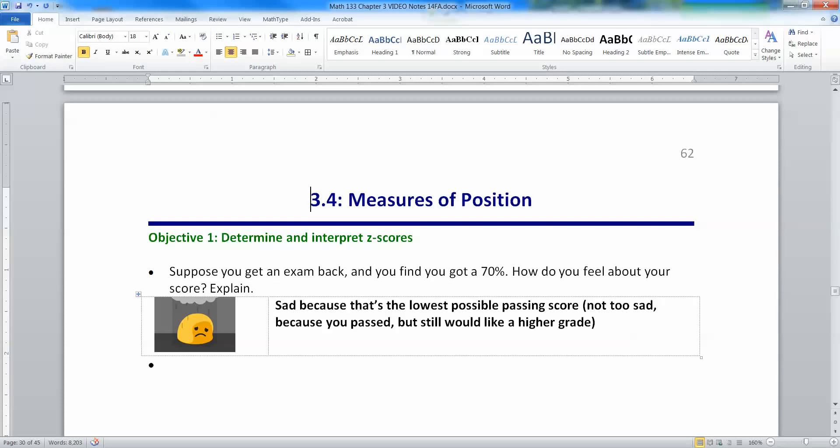In sections 3.1 through 3.3, we've talked about how to find the center and spread for both simple data sets and then more complicated frequency distributions and relative frequency distributions. Now in section 3.4, we want to take it back to the individual. We want to think about position, measures of position.